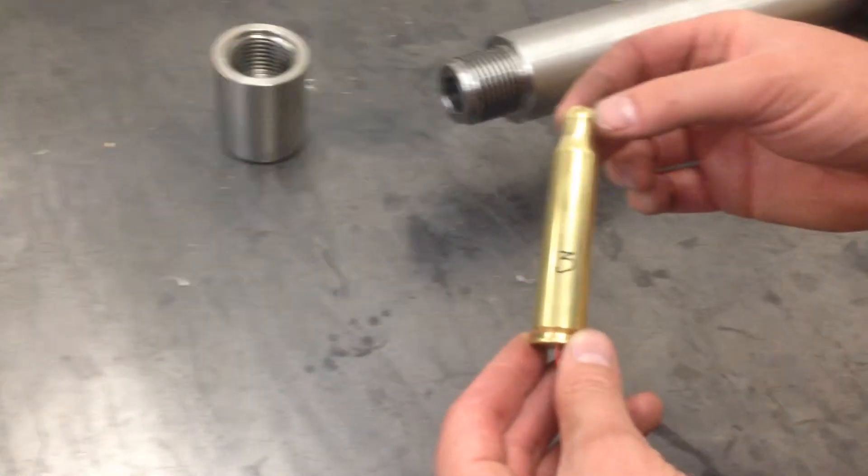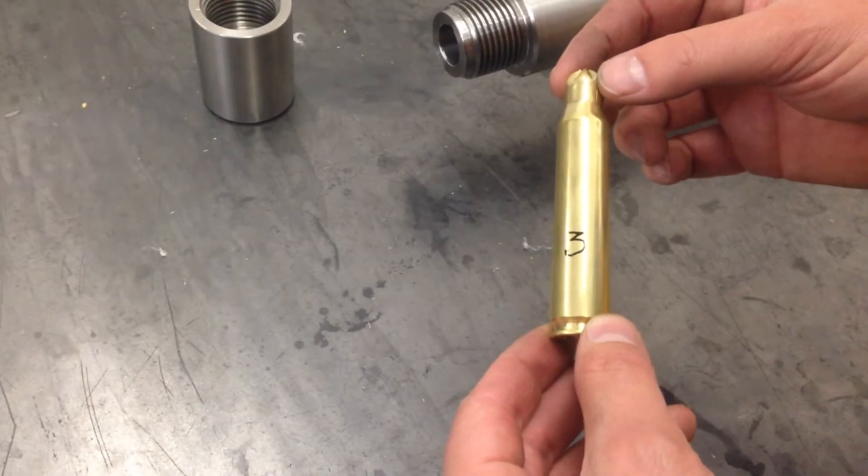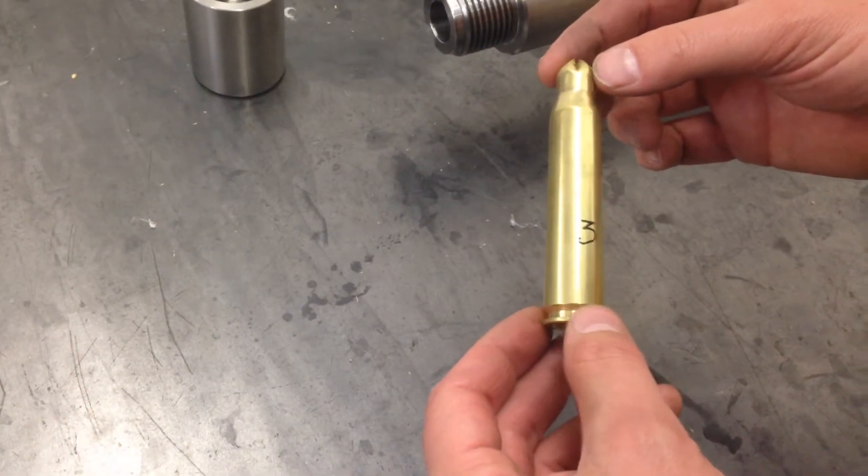This is shot number three. Once again, it's the 50 cal BMG electric blank. It's the WC860 powder, 150 grains, 10 gram.